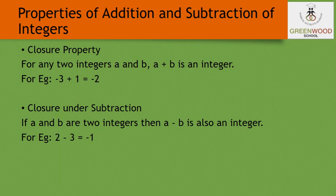Now we will see some of the properties of addition and subtraction of integers. First, the closure property states that if you add any two integers, the answer should be an integer. For example, if we take two numbers, minus 3 and 1, and add both integers, we get minus 2.